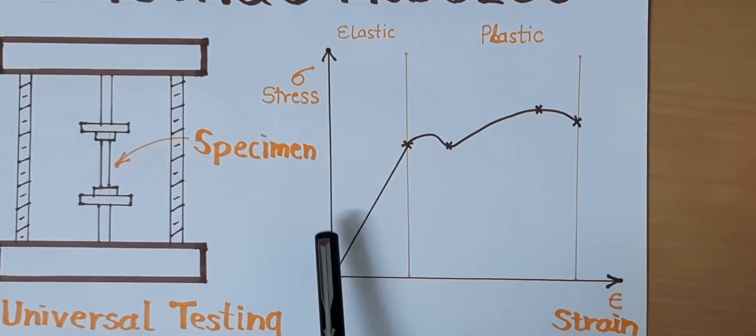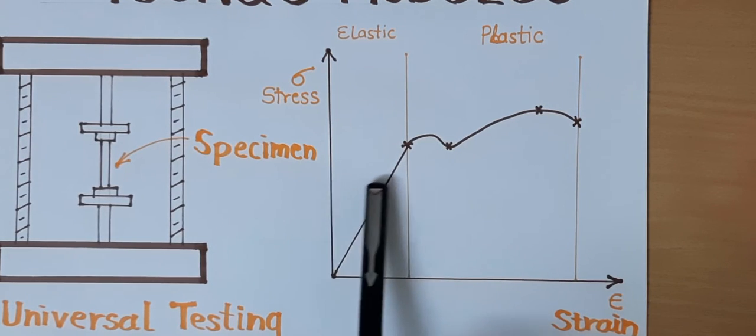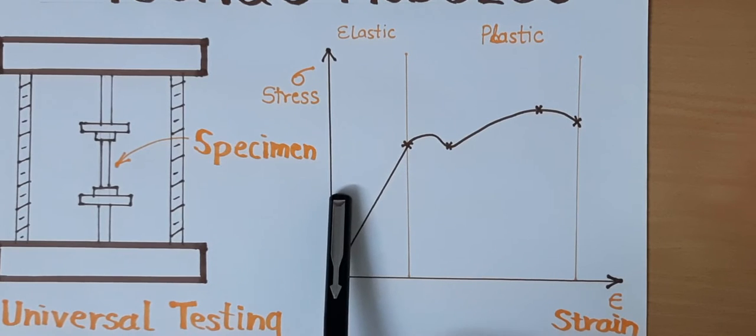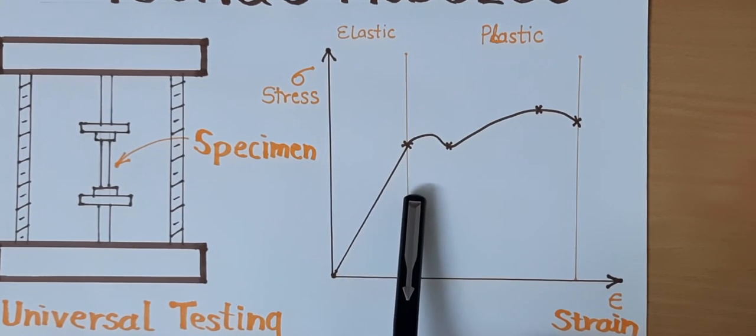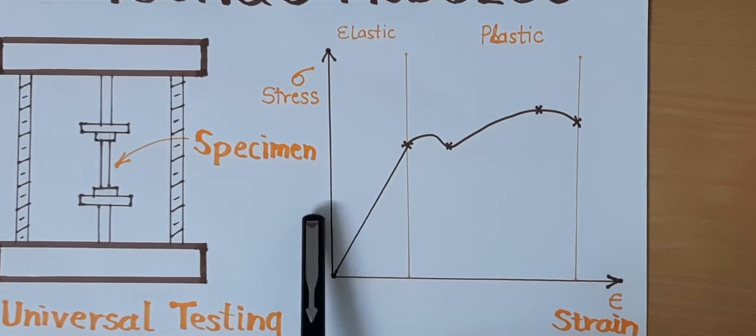If you observe these two regions separated by lines, the first region is called the elastic region. When we apply force on a body within the elastic limit, there will be stress generation and some deformation. When we remove that force, it will reduce the deformation back to zero.